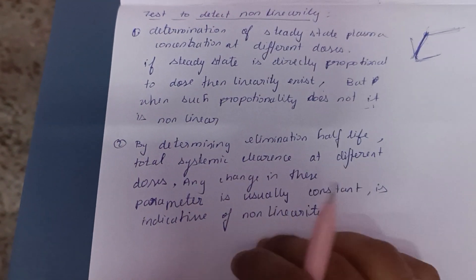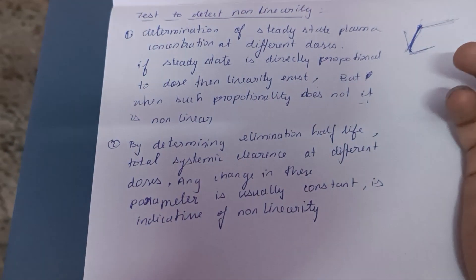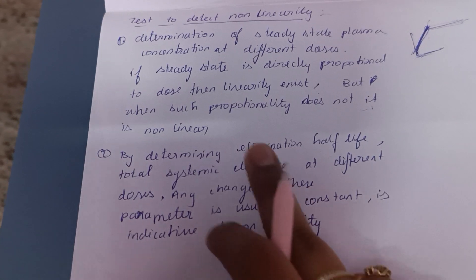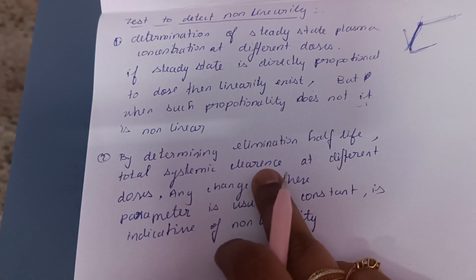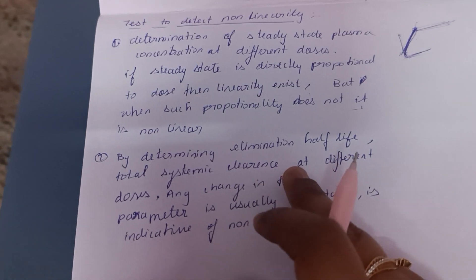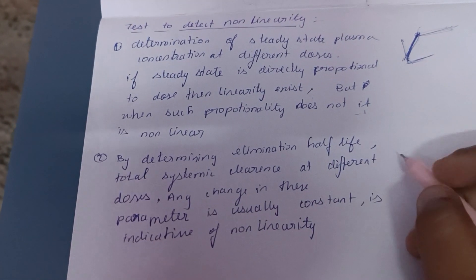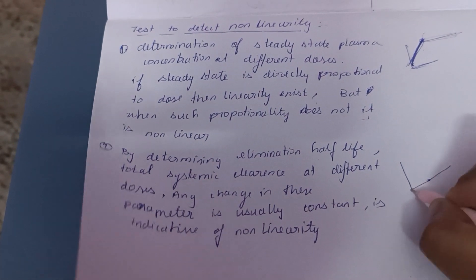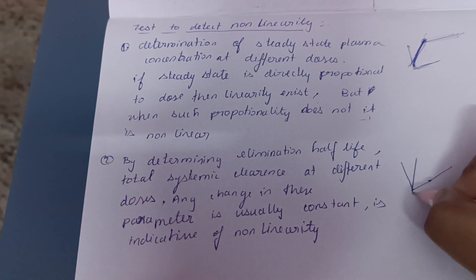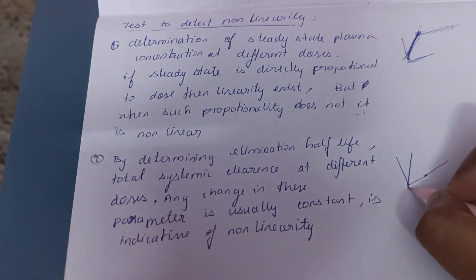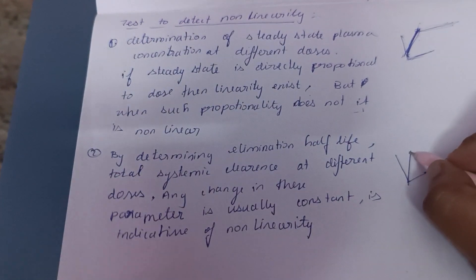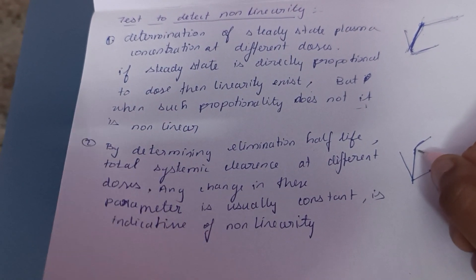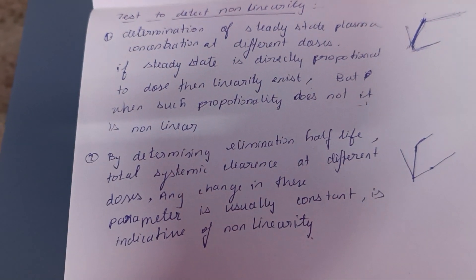The second method is the indirect method. In that method, we find out the plasma concentration parameters — clearance — such as elimination half-life and systemic clearance. We find out these parameters. If the elimination half-life and systemic clearance and steady-state plasma concentration are constant, it is linear first order kinetics. If they vary, you will find mixed order — indicating that a non-linear event exists.